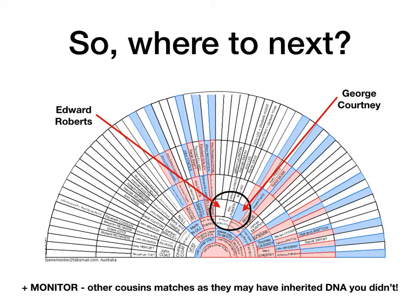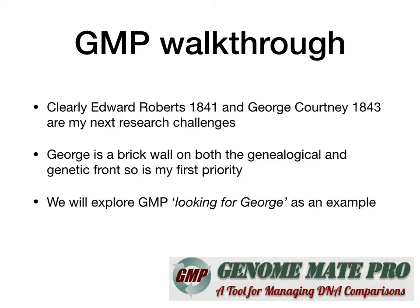I'm working backwards in my pedigree to complete each ring. In the second great grandparent ring, I've got everyone DNA confirmed except for two empty boxes — Edward Roberts and George Courtney — so they're my next challenges. George is a brick wall on both the genealogical front and the genetic front. He was the person I first tested for, and so I've got a look at Genomate Pro today using 'Looking for George' as a bit of an example.